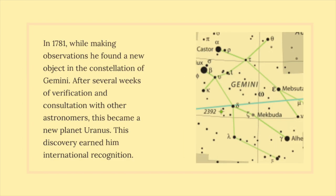In 1781, while making observations he found a new object in the constellation of Gemini. After several weeks of verification and consultation with other astronomers, this became a new planet Uranus. This discovery earned him international recognition.